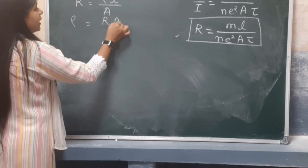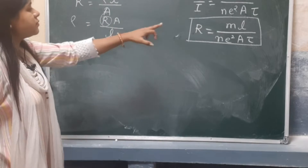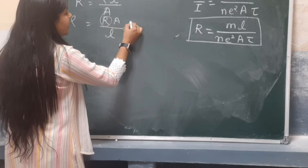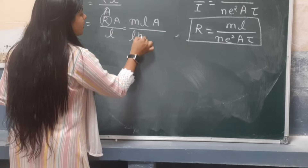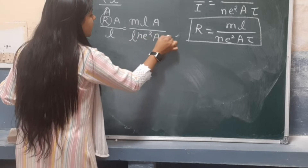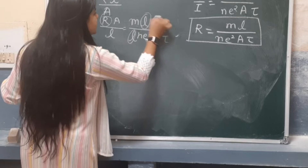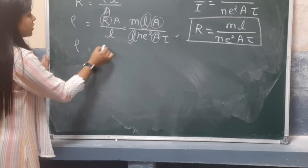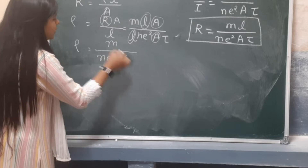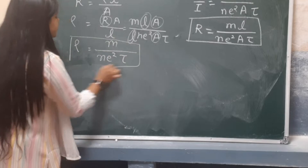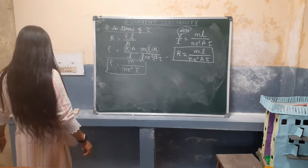Rho equals R times A divided by L. Substituting the value of R, we have ρ = mL·A/(ne²Aτ). The L cancels and the area cancels, so we get rho is equal to m/(ne²τ). This is the value of resistivity in terms of relaxation time.